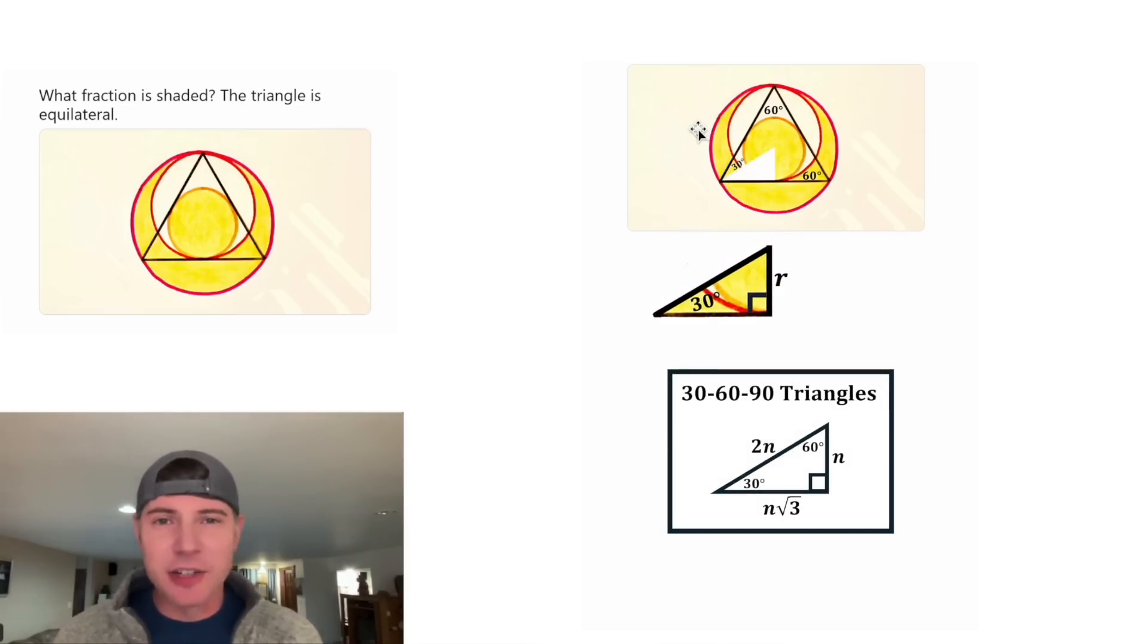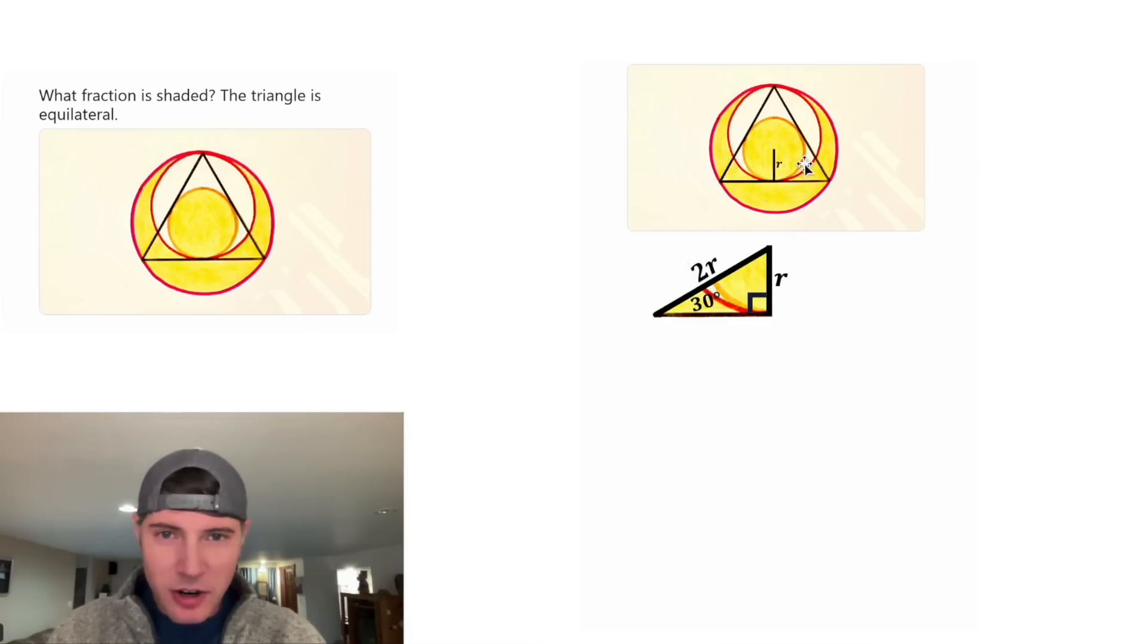This is a 30-60-90 triangle. And in every 30-60-90 triangle, the hypotenuse is twice as long as the shortest side. So the hypotenuse will be equal to 2r. And if we look back up here, this r relates to the radius of the smaller circle, and the 2r is the radius of the larger circle.